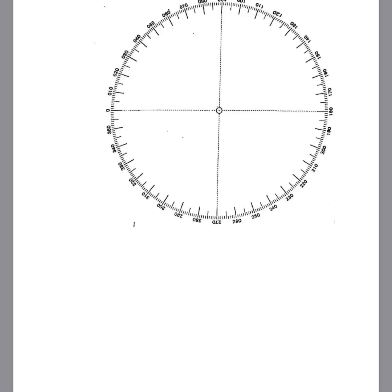For the plotting, you will need a plotting sheet. I will be using my plotting sheet here. The orientation is a bit off, but I will assume this is in the orientation of 000 degrees at the top, 180 degrees at the bottom, 270 degrees to the left, and 090 degrees to the right. I'll start off using a scale of one centimeter equals one nautical mile.